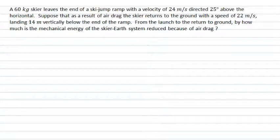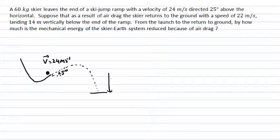A good starting point is to draw a diagram which describes the system. So we have a skier which is leaving a ski ramp and the ramp is at 25 degrees to the horizontal. The skier leaves the ski ramp with a velocity of 24 meters per second and they return to the ground via some parabolic trajectory and their landing point is 14 meters below where they initially started.